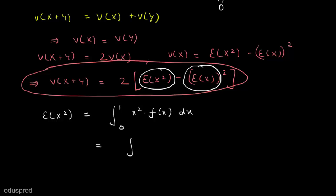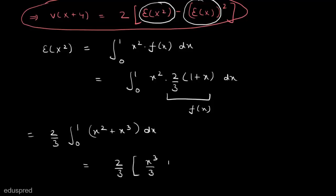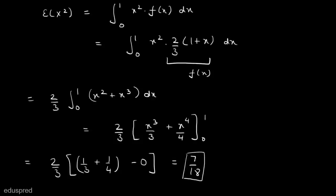This equals the integration of x² multiplied by (2/3)(1 + x) dx from 0 to 1. Since 2/3 is a constant, we take it outside, giving us (2/3) times the integration of (x² + x³) dx from 0 to 1. This equals (2/3)[x³/3 + x⁴/4] evaluated from 0 to 1, which gives (2/3)(1/3 + 1/4). Solving this, we get 7/18. So E[x²] = 7/18.